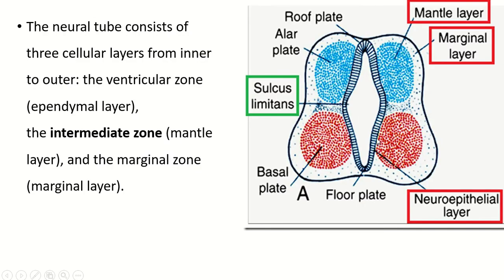Histologically, the neural tube is stratified columnar in shape. New neurons are developed by the process of mitosis as neuroblasts. These neuroblasts migrate and form a new layer known as the mantle layer. The processes of the newly formed neuroblasts extend outward and form another layer called the marginal layer. The dorsal portion of the mantle layer is formed from the alar plate, and the ventral portion forms the basal plate.